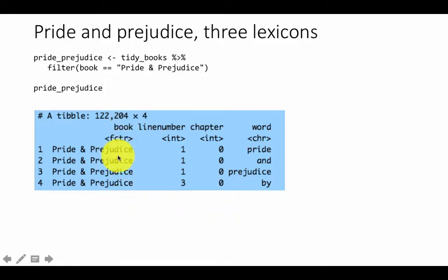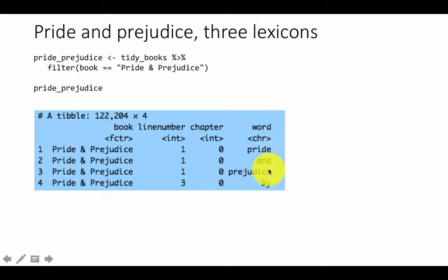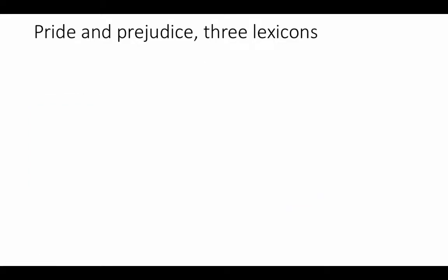So you've got the title of the book, the name of the book, the line number within the book, chapter number within the book, and the word that occurs. Pride and Prejudice all occur on the very first line — that's just the title line. The second line was empty, the third line has 'by', and so on.